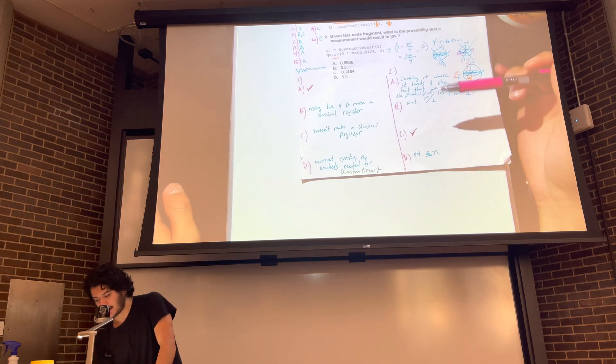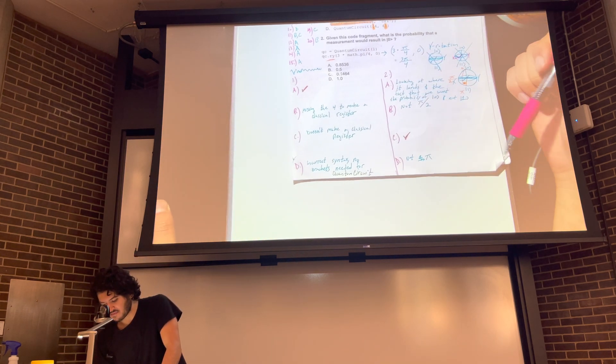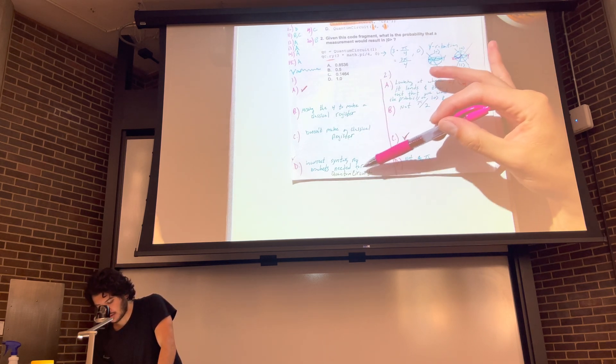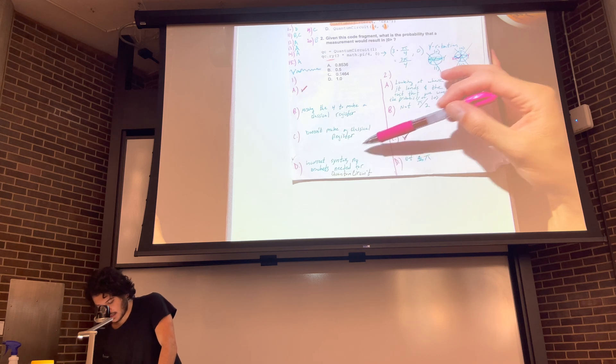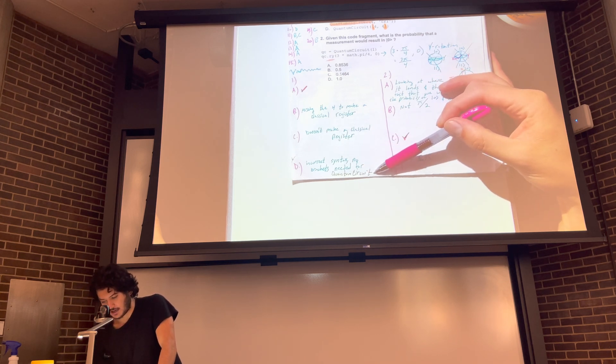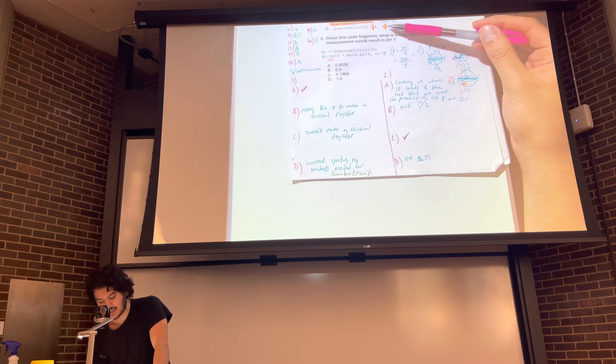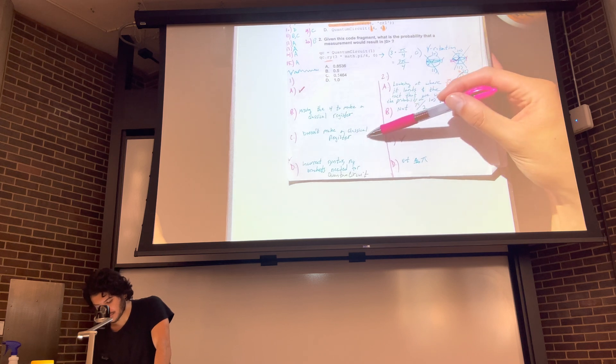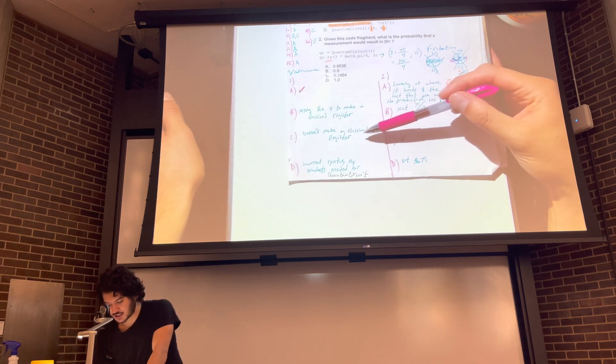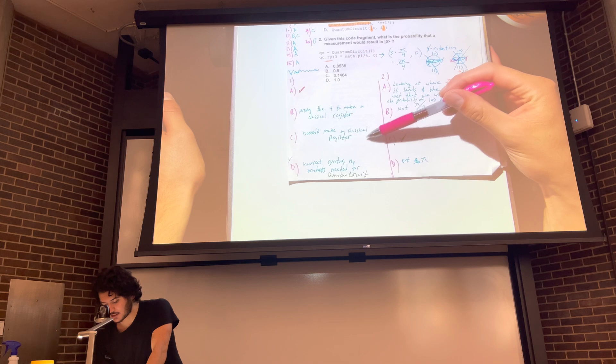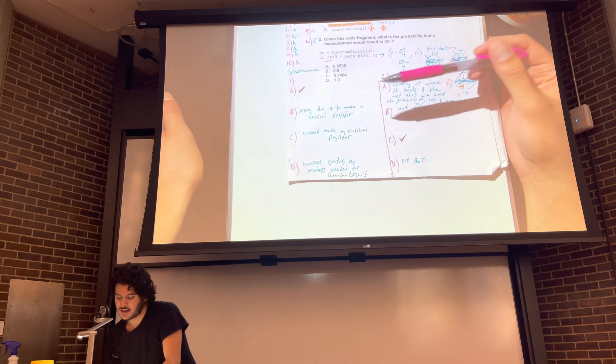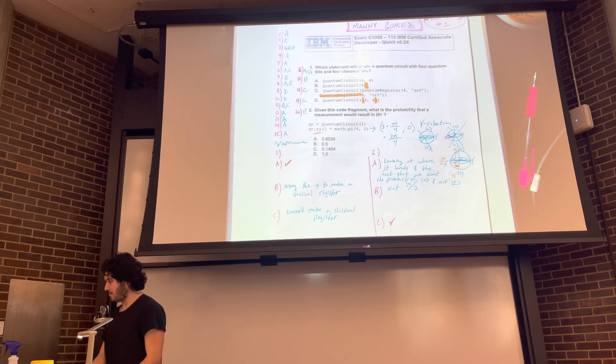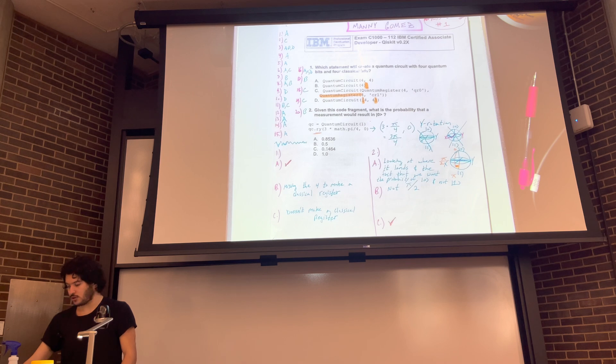So if we go to the bottom of the document, we can kind of see some rationale here. Answer A is correct, but let's ignore that. Let's start from the bottom. So number D, if we look at it, it says incorrect syntax, no brackets needed for quantum circuits. So that is why D is incorrect. It's a small syntax thing. The quantum circuit function does not need brackets. Option C, it says doesn't make a classical register. So the function quantum circuits, let me pull up the API here.